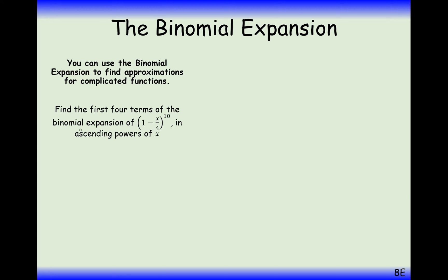So let's go through a question here. Find the first four terms of the binomial expansion, 1 minus x over 4 to the power of 10 in ascending powers of x. Just the first four terms here. So applying the formula here, it's a to the power of n. That's 1 to the power of 10.